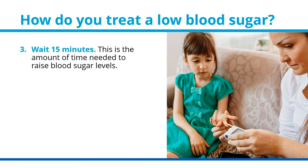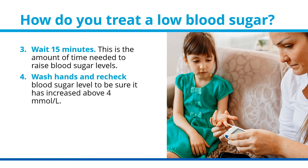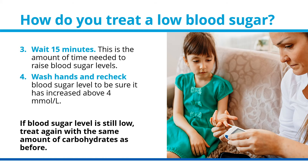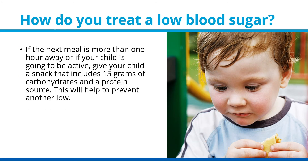Next, wait 15 minutes — the amount of time needed to raise blood sugar levels. Wash hands and then recheck the blood sugar level to be sure it has increased above 4 millimoles per liter. If blood sugar is still low, treat again with the same amount of carbohydrates as before. If the next meal is more than 1 hour away, or if your child is going to be active, give your child a snack that includes 15 grams of carbohydrates and a protein source to help prevent another low.